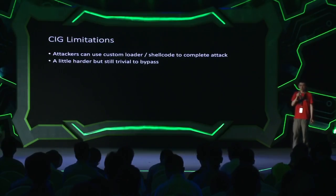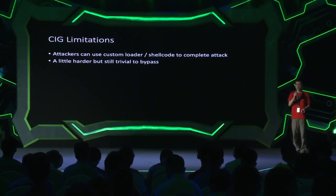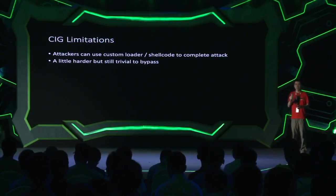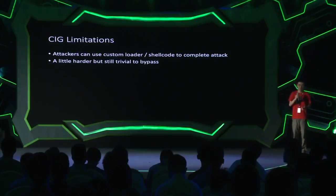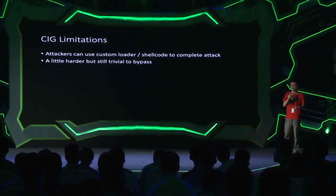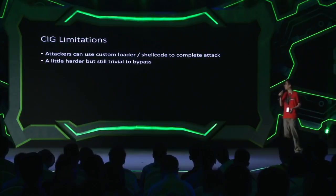CIG has some limitations. Attackers can choose to implement their own loader, such as one that maps the DLL file into a block of executable memory. Since it's only executable memory and not an image section, it cannot trigger the code integrity policy. So it's a little bit harder, but still trivial to bypass.